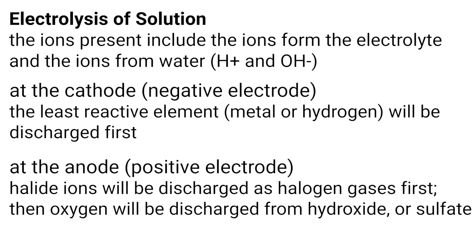At the anode, halide ions will be discharged first, and they will produce halogen gases. If there are no halide ions present, then hydroxide ions will be discharged as oxygen gas. If there are no halide or hydroxide ions, then sulfate ions will be given off as oxygen gas, and if there are any other negative ions, they will then be given off if none of the previous three are present.